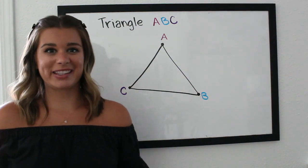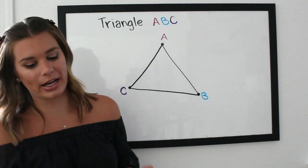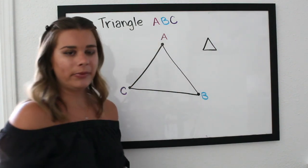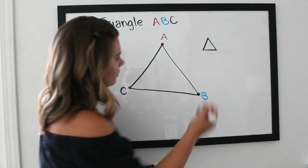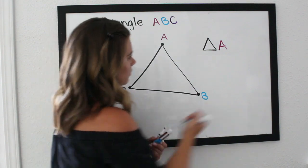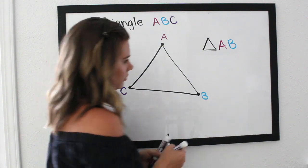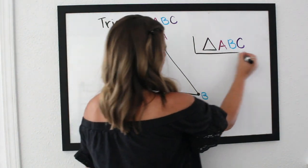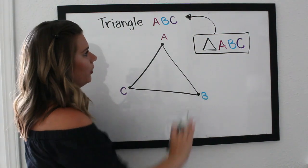We don't want to write out the word 'triangle' every time, so we use a notation: draw a little triangle symbol and write ABC next to it. This notation translates to triangle ABC — the specific triangle with those three labeled vertices.